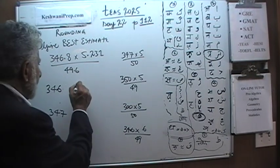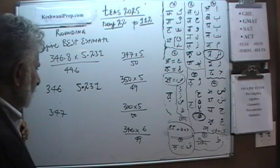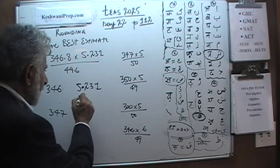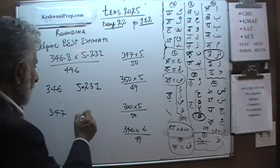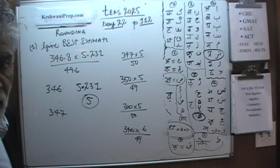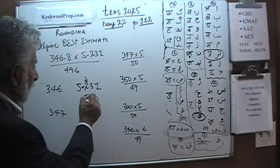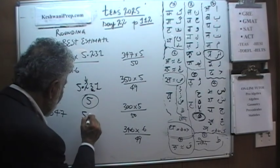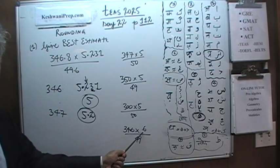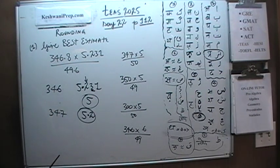Similarly, 5.231: if you were rounding it to the nearest unit digit, because 5.2 is less than 5.5, it would become 5. If you were rounding it to the nearest tenth, the tenth digit is right here, it would become 5.2. So how does it become 6? That's just nonsense. The same thing applies here — they ignored the 0.6, but you can't do that.